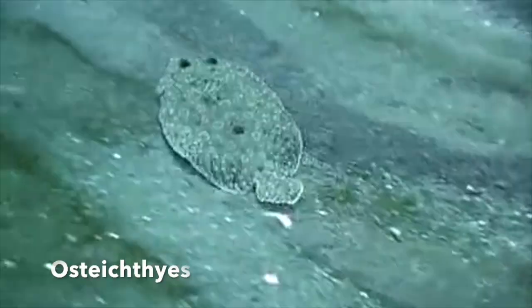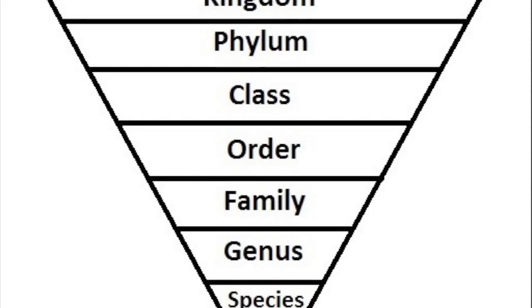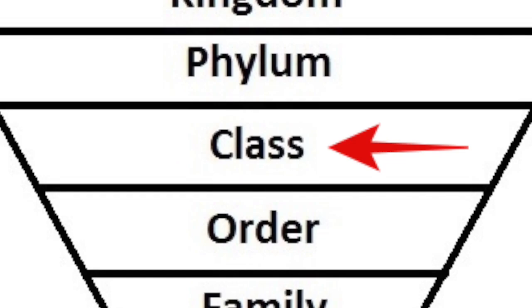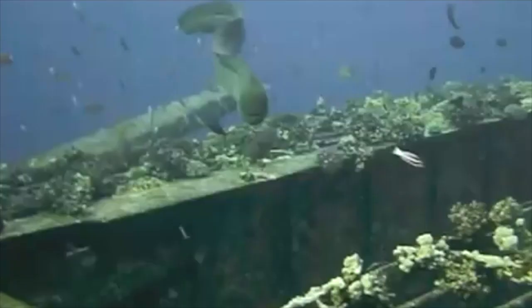Our animal group is fish, under the names Chondrichthyes and Osteichthyes. These two fish fall under the taxonomic level class.